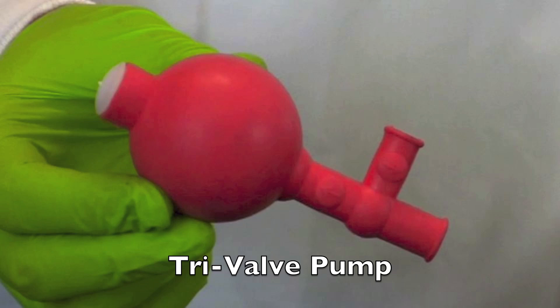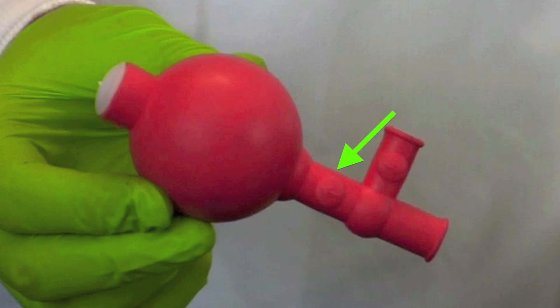A tri-valve pump has three valves: an A or air valve which releases air from the bulb, an S or suction valve used to fill the pipette, and an E or exhaust valve to empty any liquid remaining in the pipette tip.